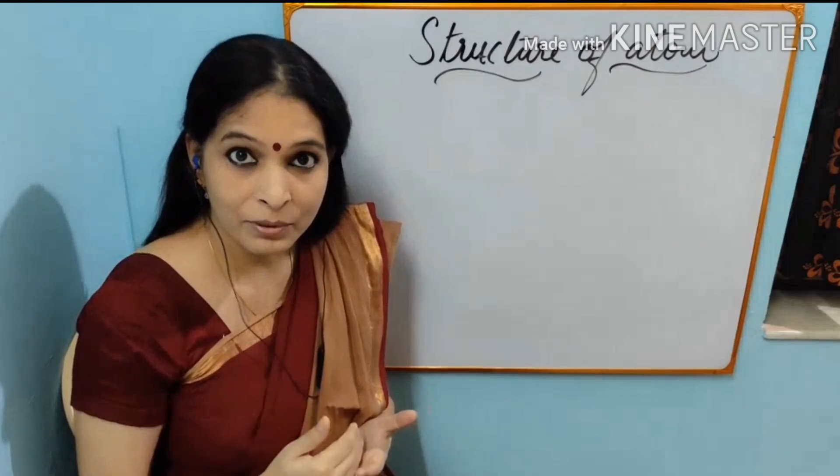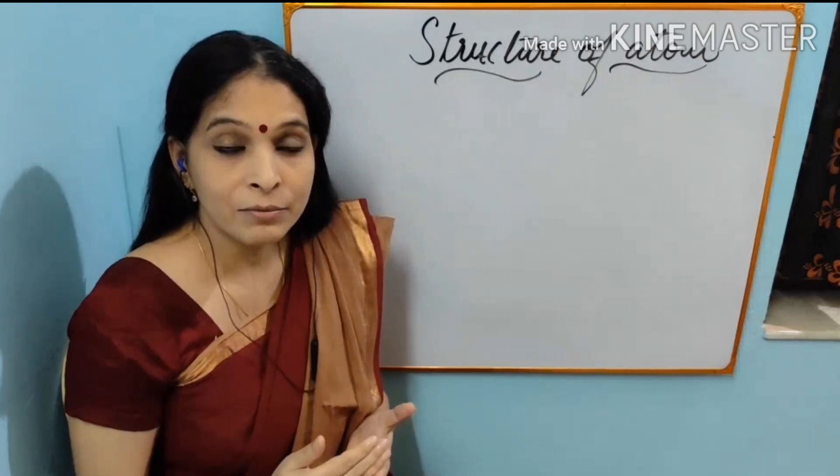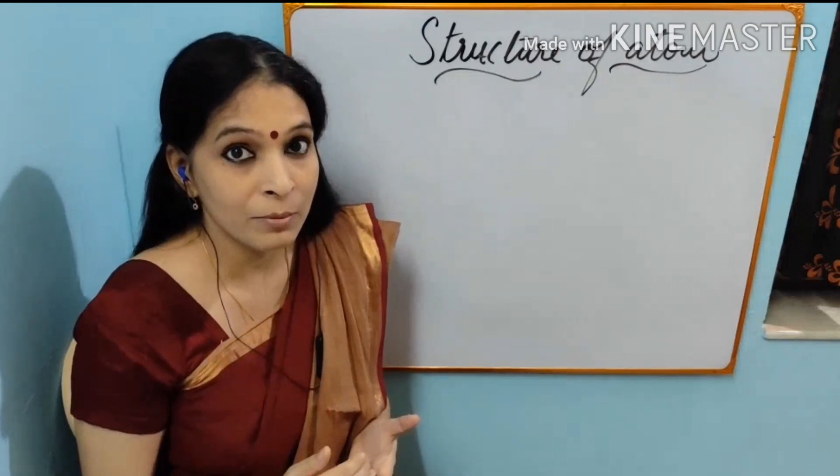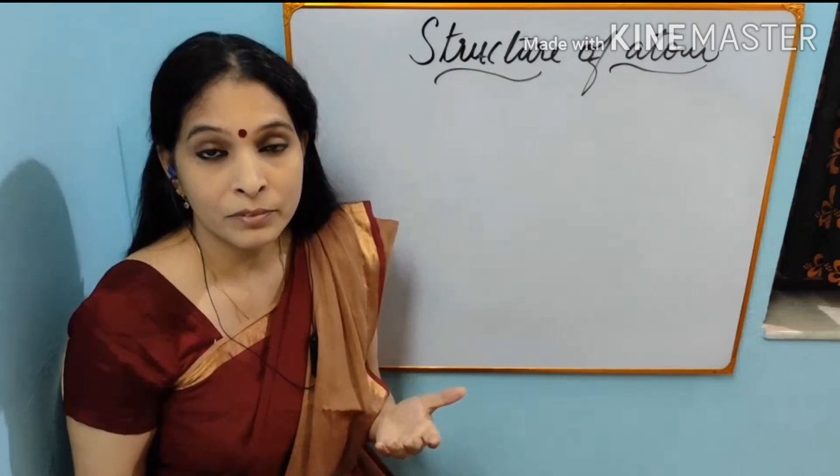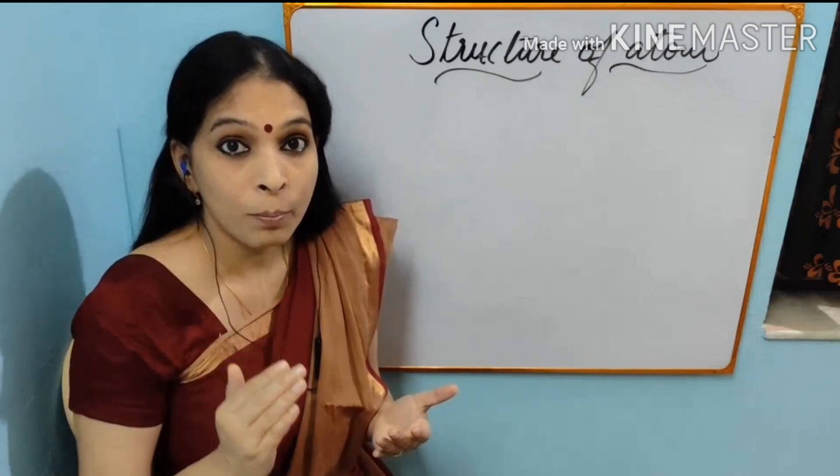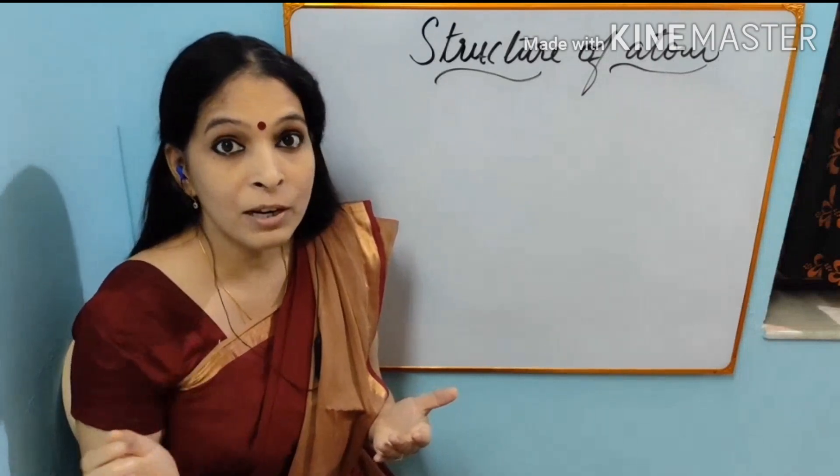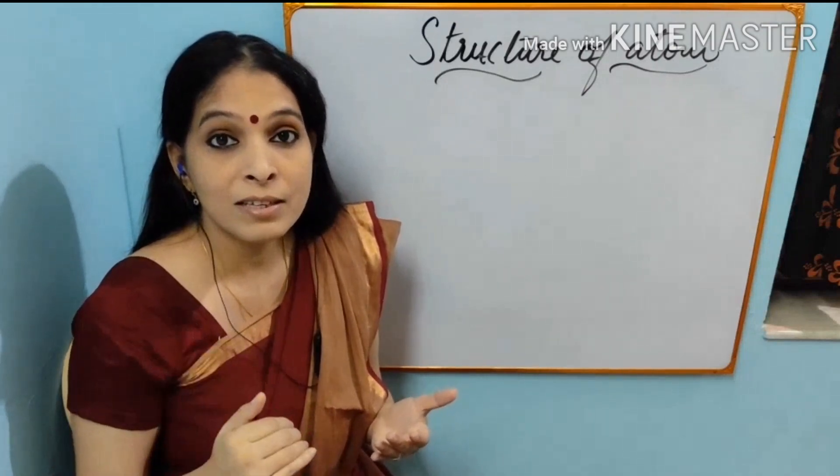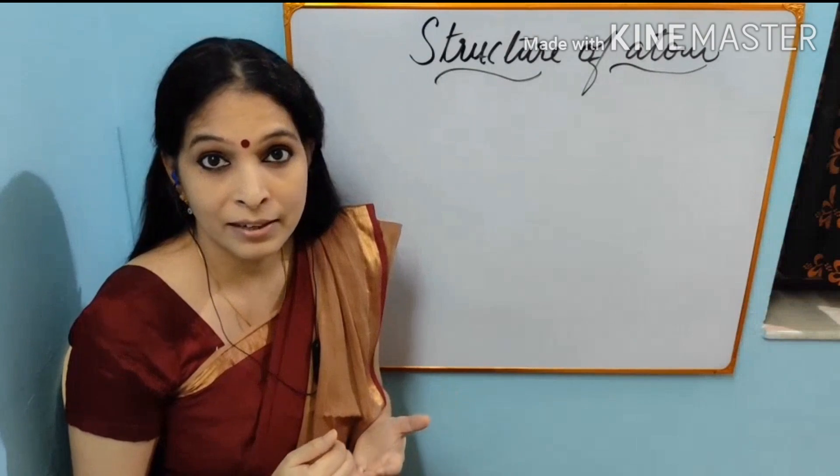For example, if we take carbon and infinitely cut it, we will get the smallest particle of carbon. This is known as atom. Again, if we are dividing this atom, its property as carbon will be lost. And we will see subatomic particles inside it.